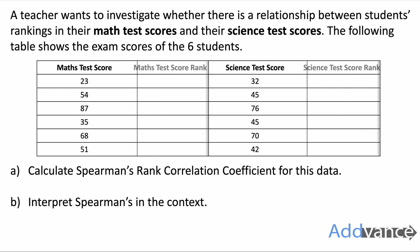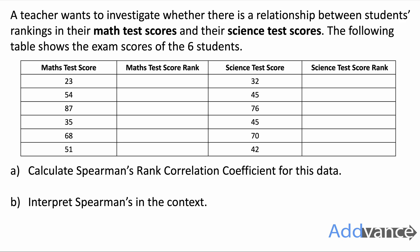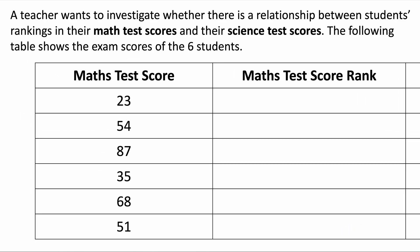The first thing we're going to do is add two more columns to our table — the maths test score rank and the science test score rank. Let's rank the maths test scores first, starting with the smallest number, which is 23, giving it a rank of one. The next highest is 35 with rank two, then 51 with rank three, 54 is fourth, 68 is fifth, and 87 is the highest with a rank of six.